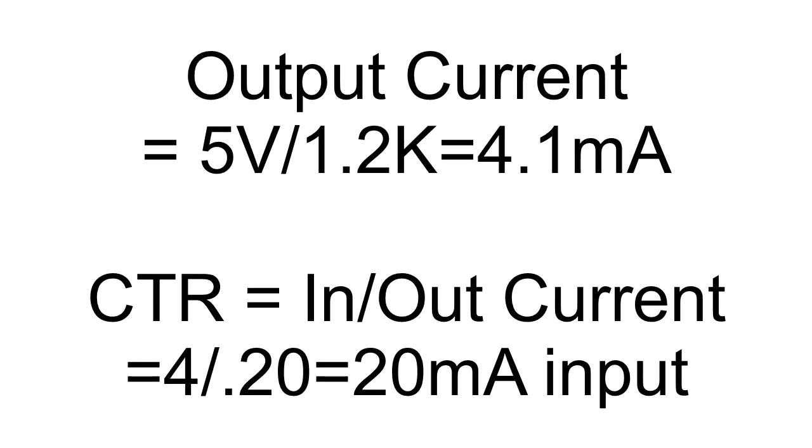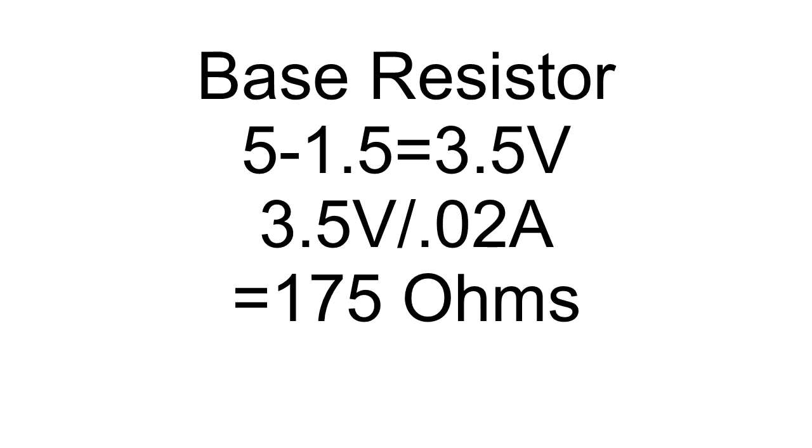Now here's where the current transfer ratio or 20% of the part comes into play. For a 5 volt output swing across a 1.2 K ohm resistor, that would be 4.1 milliamps of collector current. If the current transfer ratio is 20%, that's five times as much, therefore the base current would have to be 20 milliamps. With three and a half volts across that base resistor at 20 milliamps, that's about 175 ohms base resistor value.